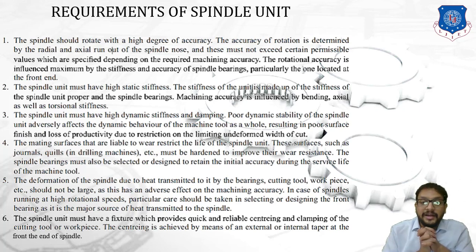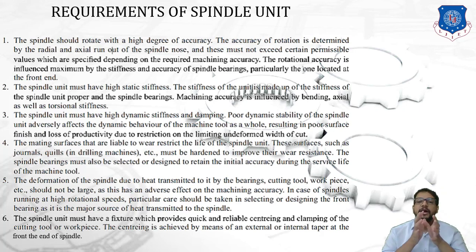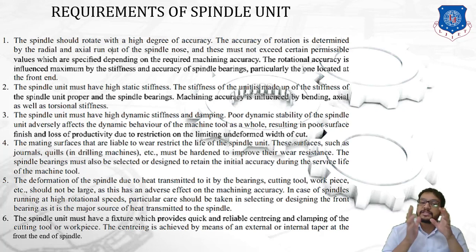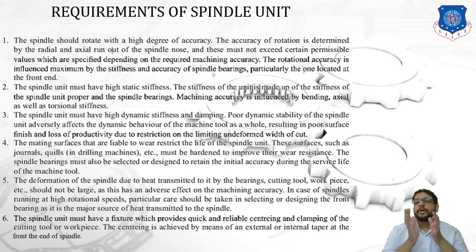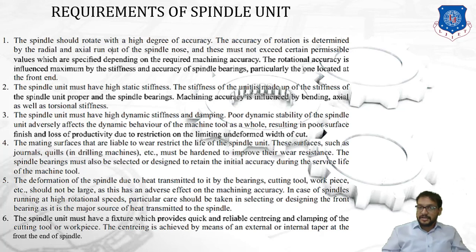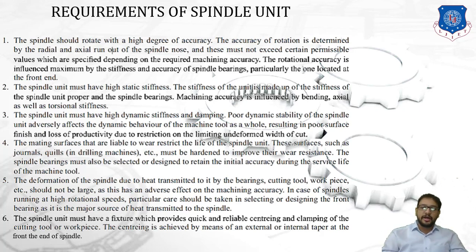The first major requirement is that the spindle should rotate with a high degree of accuracy. The accuracy of rotation is determined by the radial and axial runout of a spindle nose, and this must not exceed certain permissible values specified depending on the required machining accuracy. Rotational accuracy is influenced most by the stiffness and accuracy of the spindle bearings, particularly those at the front end.